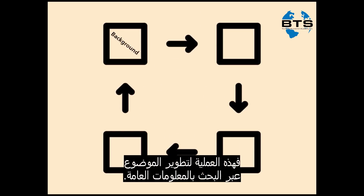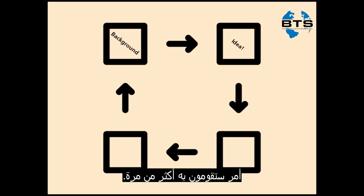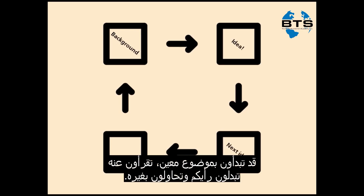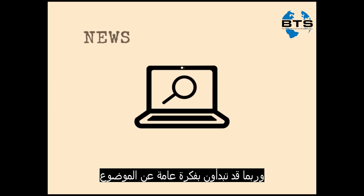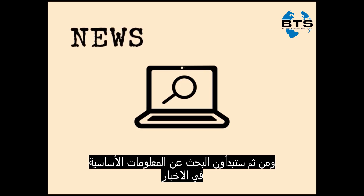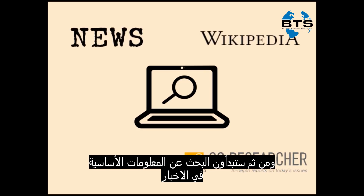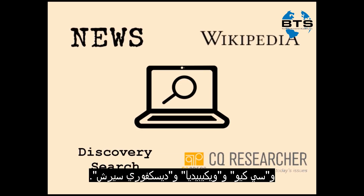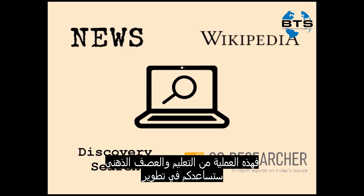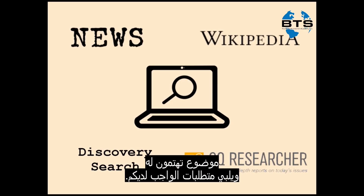This process of doing background research to develop your topic is something you'll probably do more than once. You might start with one topic, read a little, change your mind, and try another. You might also start with a general idea of your topic and jump right into looking for background information in the news, CQ Researcher, Wikipedia, and Discovery Search. This process of learning and brainstorming will help you develop a topic that interests you and fits the requirements of the assignment.